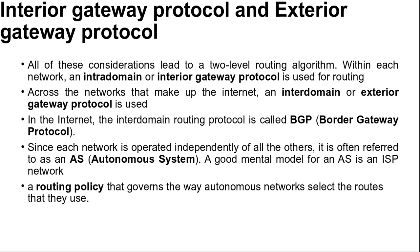A large determining factor in how routes across the internet are determined is the business arrangements between ISPs. Each ISP may charge or receive money from other ISPs for carrying traffic. Another factor is that if inter-network routing requires crossing international boundaries, various laws may come into play — such as Sweden's strict policy laws about exporting personal data about Swedish citizens from Sweden. All of these non-technical factors are wrapped up in the concept of routing policy, which governs the way autonomous networks select the routes that they use.